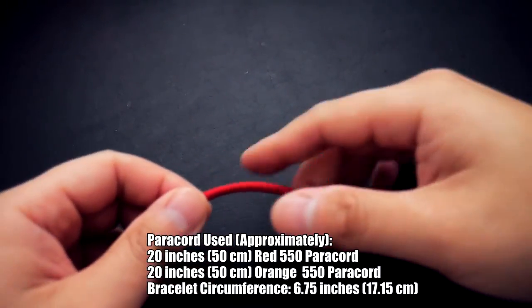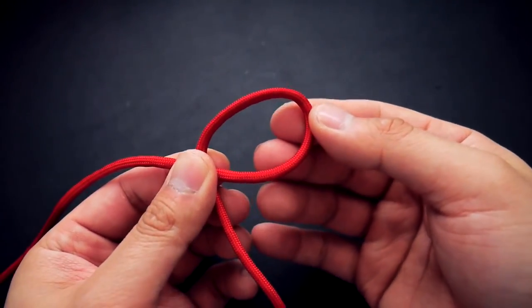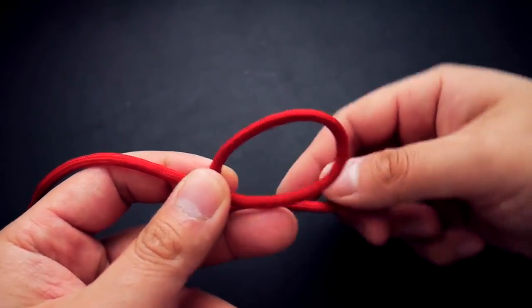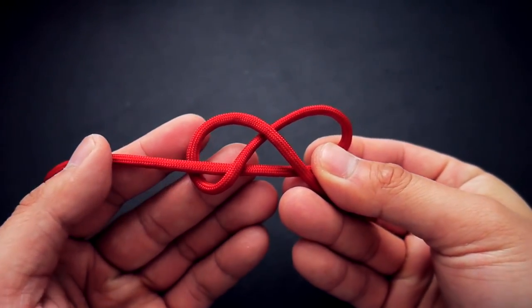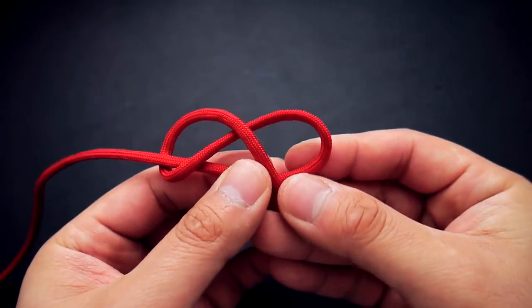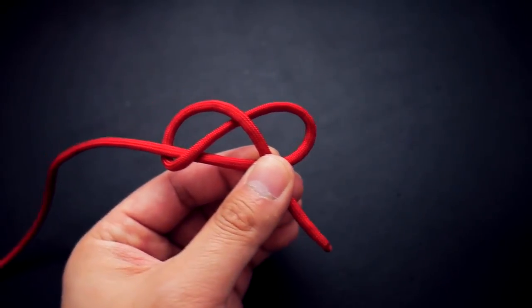To start out, I'm working with one of my pieces of paracord. I'm going to make a simple overhand loop like so. With that same shorter end, I'm going to bring it around behind and make this figure-eight, keeping that working strand in front on that first loop.